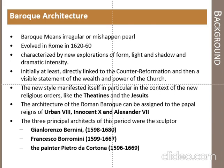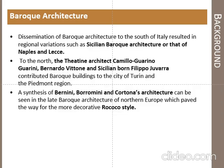The main architects of this style were Bernini, Borromini, and Cortona. These architects were basically sculptors. There was regional variation in the south of Italy, such as Sicily Baroque architecture or that of Naples and Lecce. To the north, the Theatine architect Camillo Guarini, Guarino Guarini, Vittone, and Filippo Juvara contributed Baroque buildings to the city of Turin and the Piedmont region.